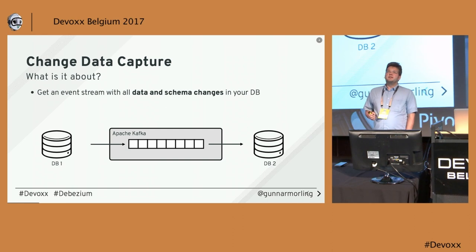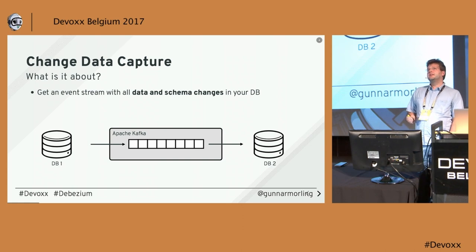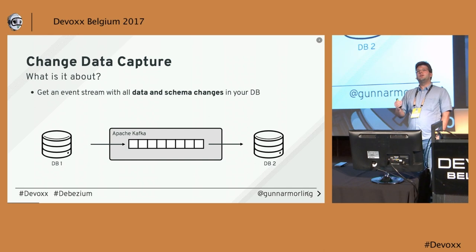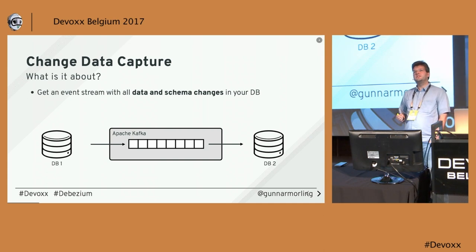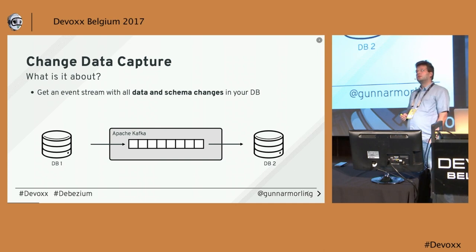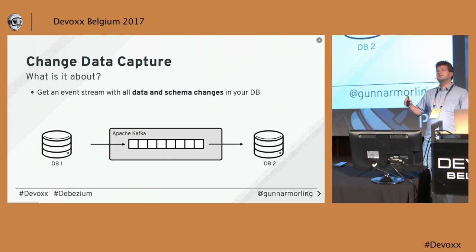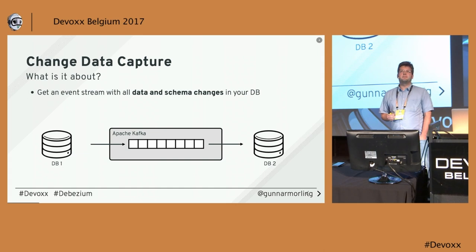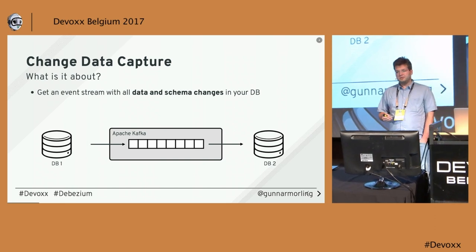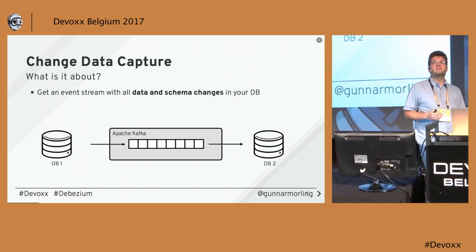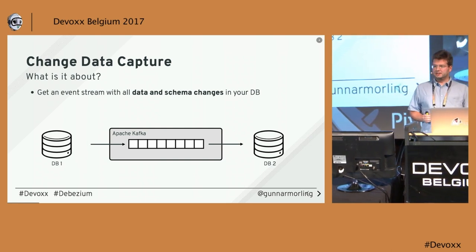So what is change data capturing about? Generally, the idea is this: you have your data in your database, and you create a stream of events representing all the changes to tables within this database. For all the inserts, all the updates, all the deletes, one corresponding event representing this change will be emitted and made available to consumers. Here I'm showing Apache Kafka as a messaging infrastructure for it, but CDC is not implicitly tied to Kafka specifically.